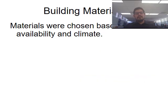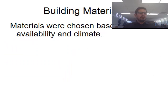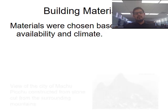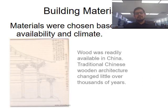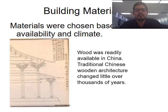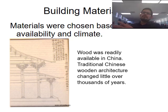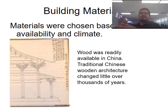In terms of building materials, materials were chosen based on availability and climate. Whether we think of Greece, Machu Picchu, China, or Japan, all those structures were built with what was available to them. In Machu Picchu, which I went to recently, we see all these giant stones. If you go to Japan you see a lot of wood structures — because that's the type of material that was available there.